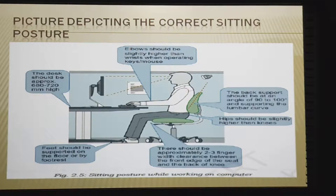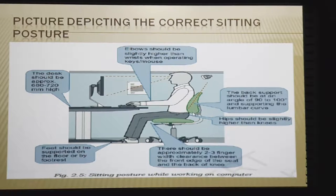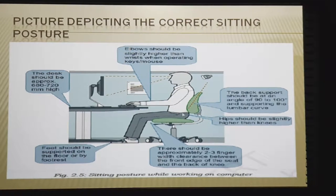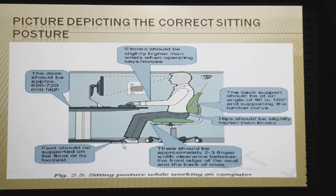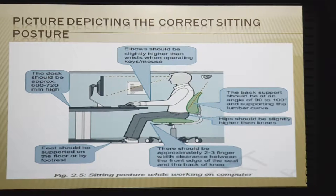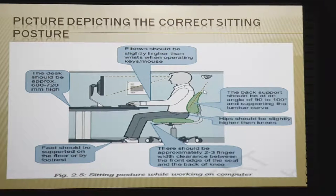All four sitting postures discussed can be easily visualized from the picture depicting the correct sitting posture. Our back should touch the lower portion of the chair's backrest, our back should be straight, our head and neck should be slightly bent and tilting towards the monitor. Our feet should be exactly horizontal, laid flat on the floor. This is the exact sitting posture of a person while working at the computer.